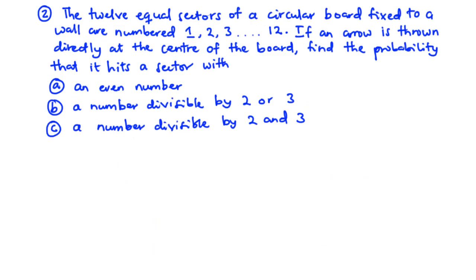Now let's solve the second example. The 12 equal sectors of a circular board fixed to a wall are numbered 1 through to 12. If an arrow is thrown directly at the center of the board, find the probability that it hits a sector with: A, an even number; B, a number divisible by 2 or 3; and C, a number divisible by 2 and 3.